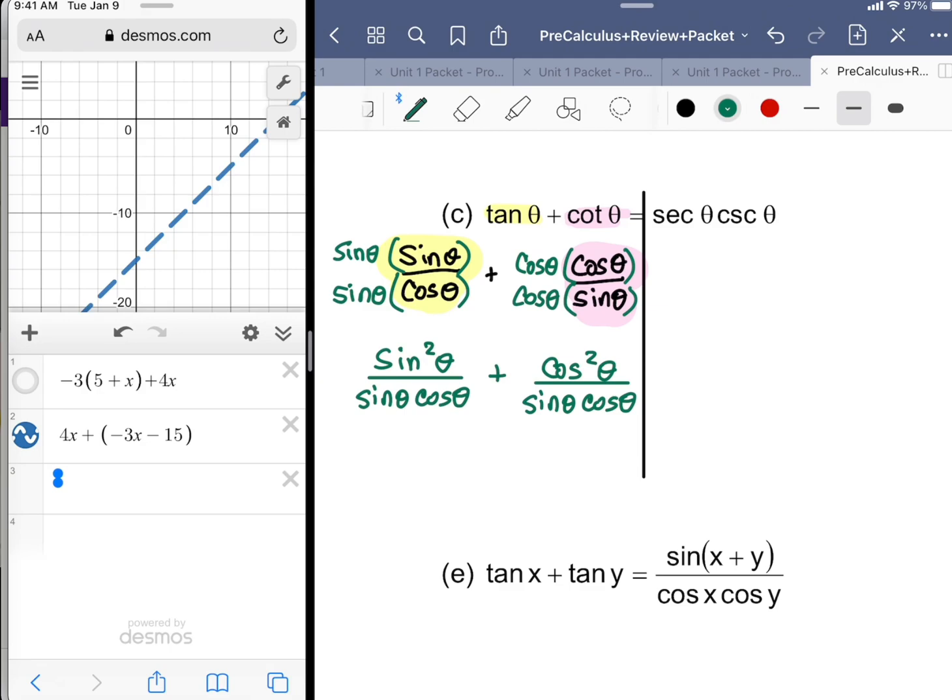Now that we have that common denominator, I can put it all together and get sine squared theta plus cosine squared theta over sine theta cosine theta. What is sine squared theta plus cosine squared theta? It equals one. So we have one over sine theta cosine theta.